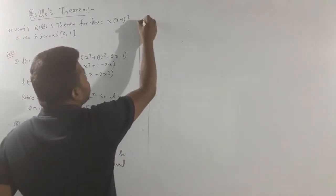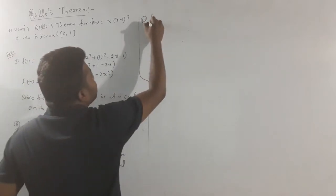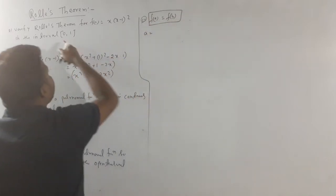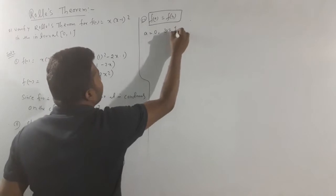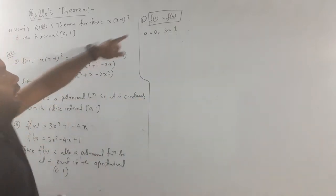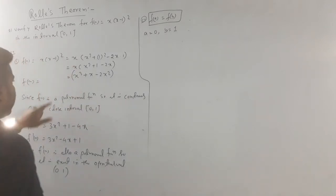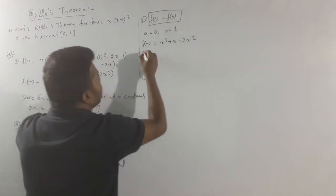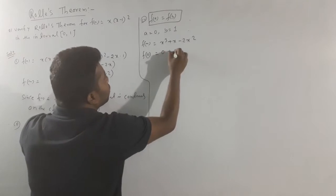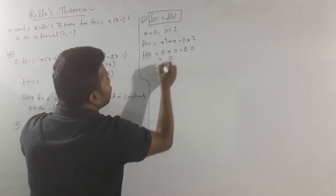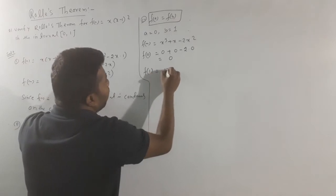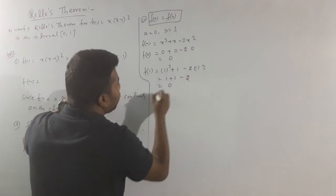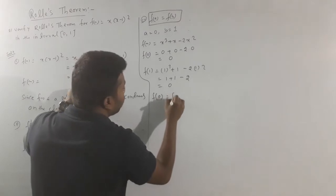Now the third point: check f of a equal to f of b. Here a equals 0 and b equals 1. f of x equals x cubed plus x minus 2x squared. So f of 0 equals 0 plus 0 minus 0 equals 0. And f of 1 equals 1 plus 1 minus 2 equals 0. Therefore f of 0 equals f of 1.